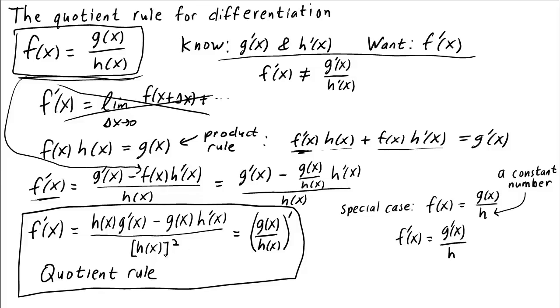This special case can help you remember that the term with the g prime of x, i.e. the term where you differentiate the numerator, is the one without the minus sign.